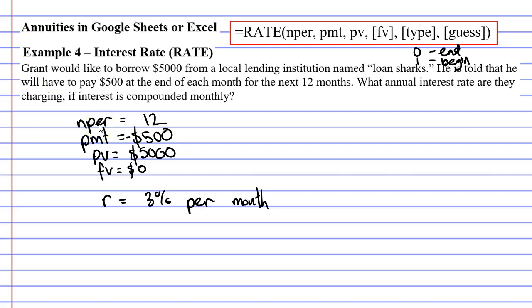So we need to convert this to a yearly interest rate. 3 times 12 gives us 36% per annum.